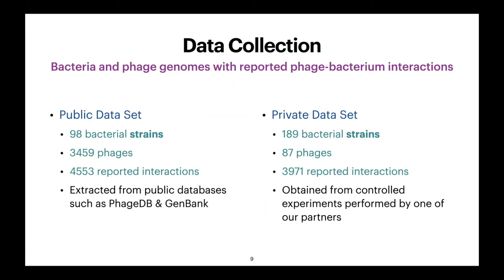We were trying to predict at the strain level. From the public dataset we obtained almost 100 bacterial strains. The private dataset was obtained with our partners — the University of Lausanne and the Inselspital hospital in Bern. From them we obtained a much more structured dataset with more bacterial strains but a much more reduced set of phages, and a more or less equivalent number of interactions.